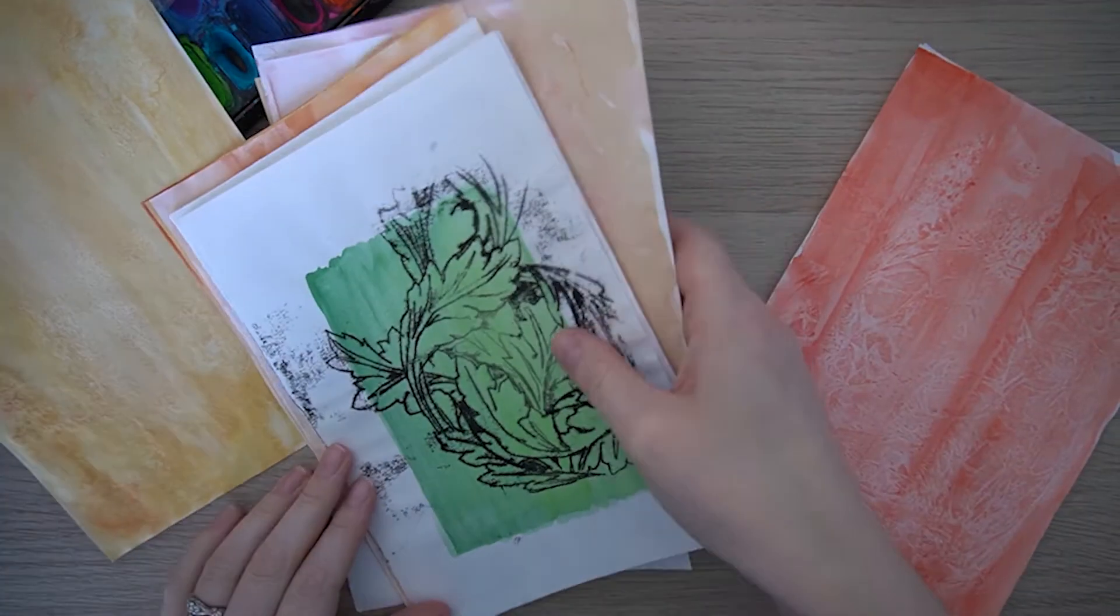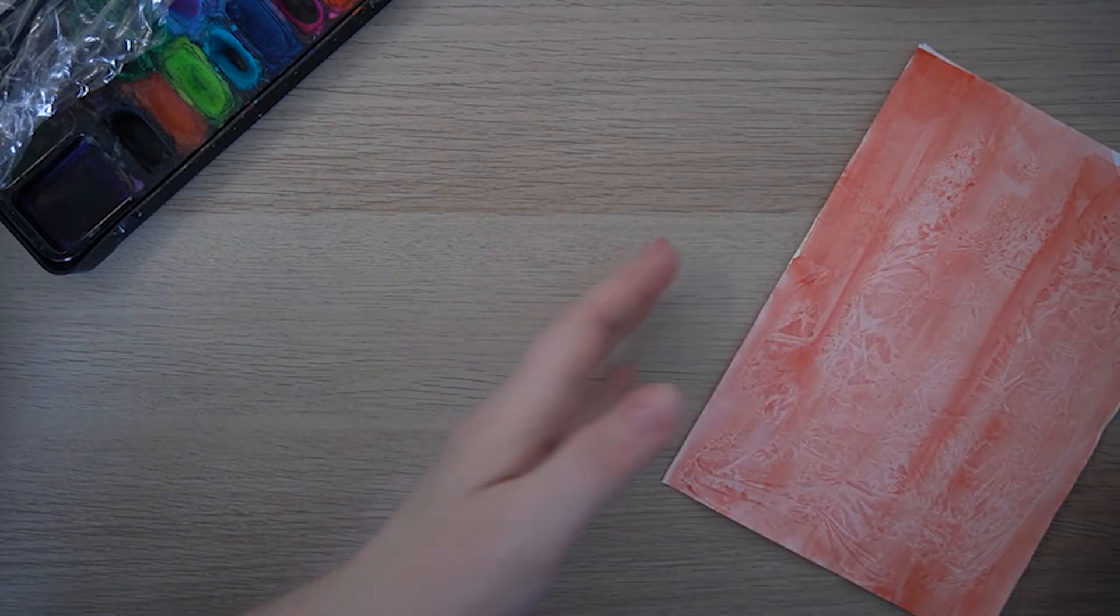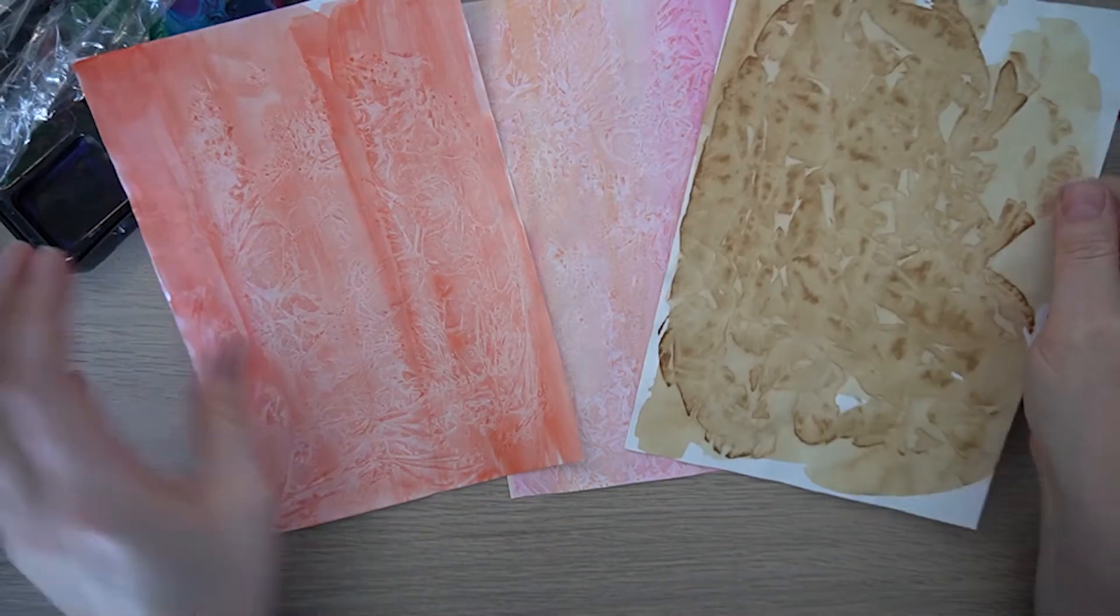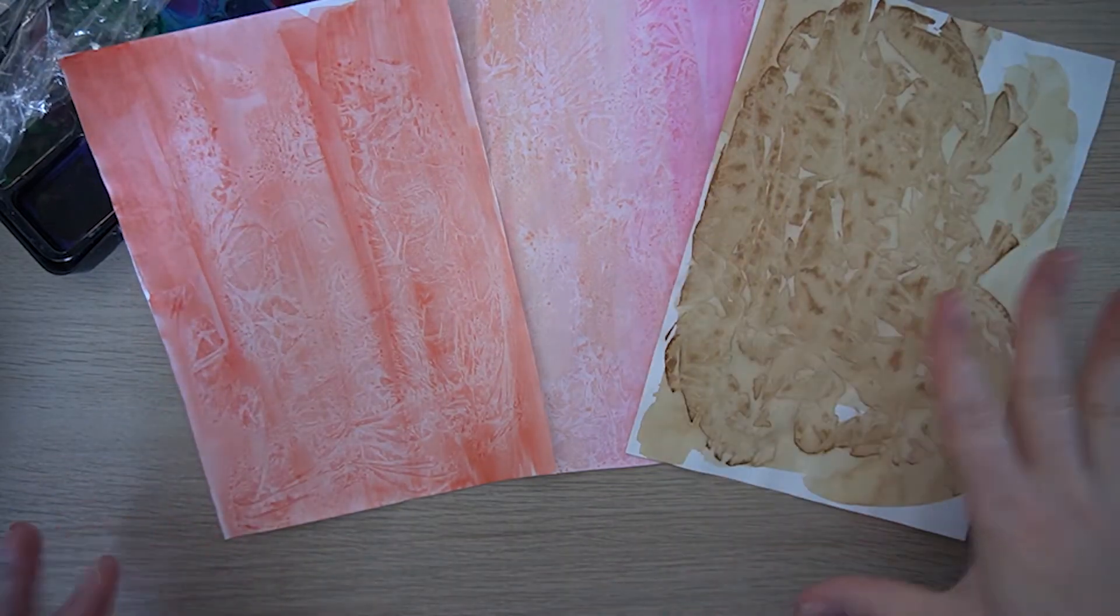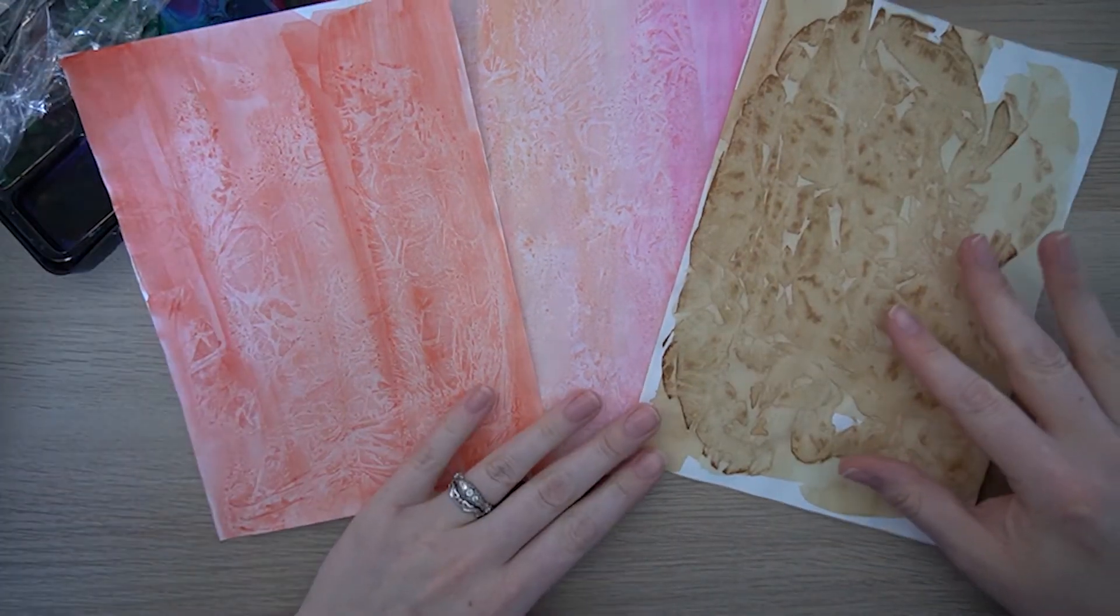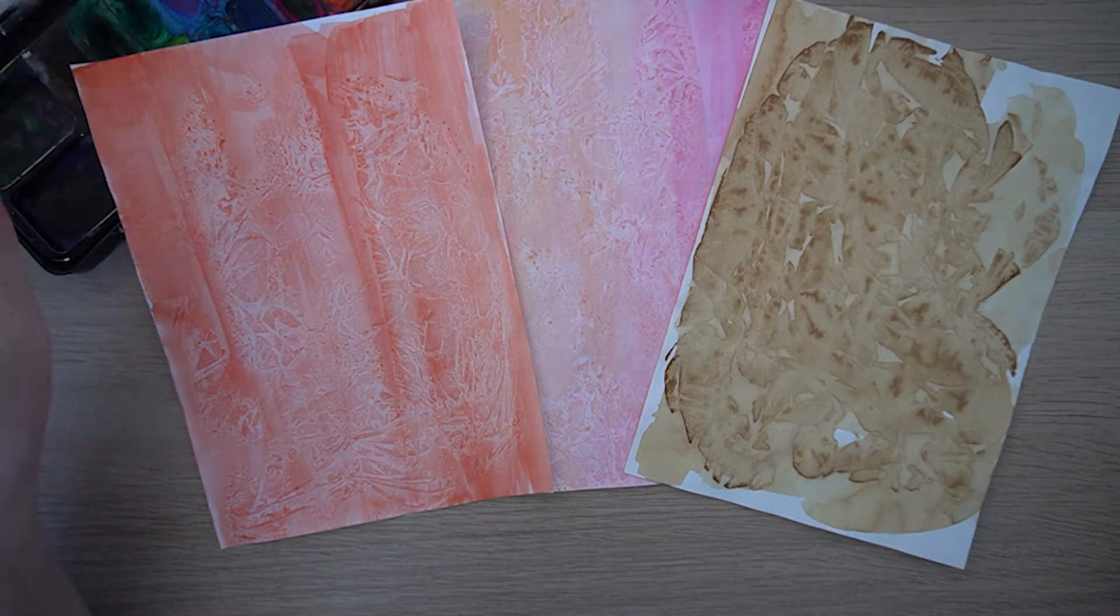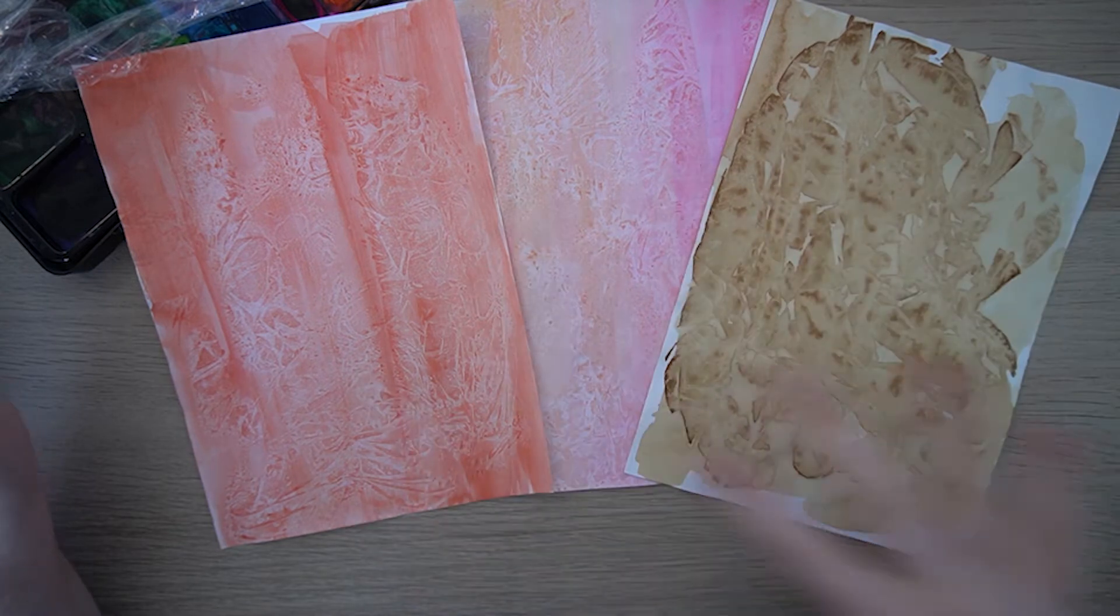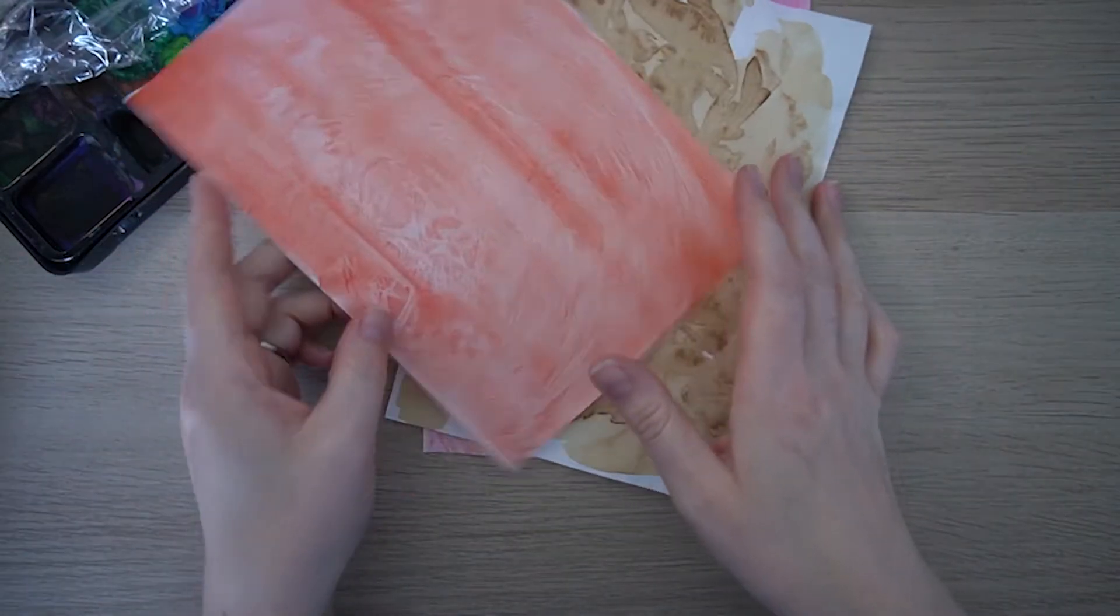So the first one we are going to do is a cling film wash. So these are examples of washes of color where cling film has been added afterwards. So you do a simple wash of color and then add the cling film on top, leave it to dry, and when you take the cling film off this is what you get at the end. So let me show you.